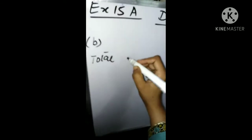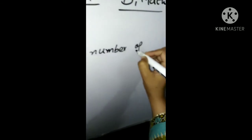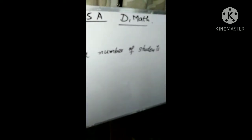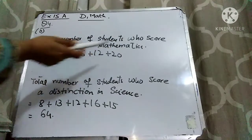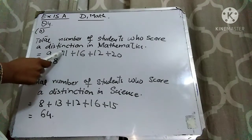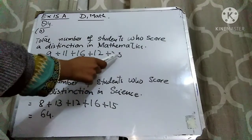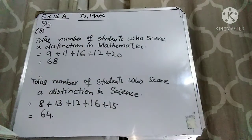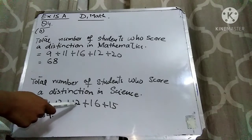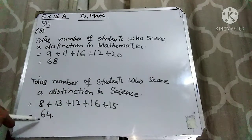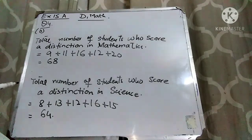To find the total number of students who scored a distinction in mathematics, add up all the values: class 1A has 9, class 1B has 11, class 1C has 16, class 1D has 12, and class 1E has 20. Adding these gives 68. Similarly for science: 1A has 8, 1B has 13, 1C has 12, 1D has 16, and 1E has 15. Adding these gives 64.